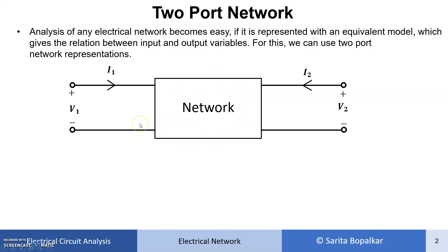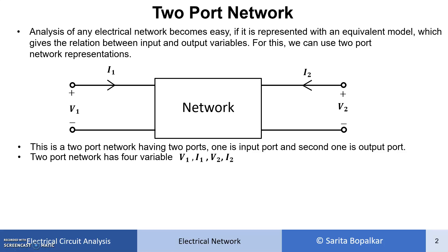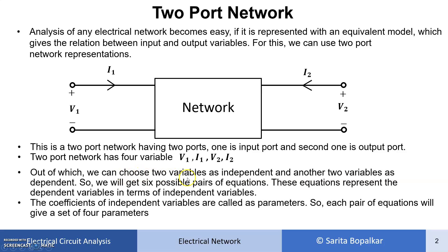This network is called a two-port network because it has an input port and an output port. This two-port network has four variables: V1 (input voltage), I1 (input current), V2 (output voltage), and I2 (output current). We want to develop relations between these input and output variables. We have four variables, out of which we choose two as independent variables and the other two as dependent variables, and we will get six different pairs of such equations.